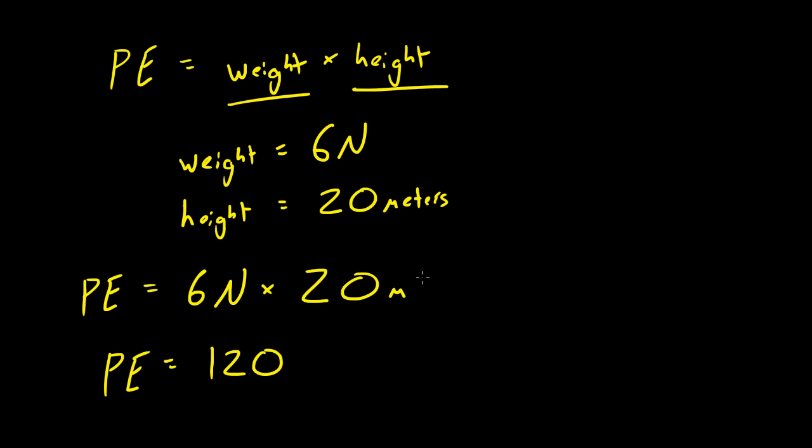And if you remember from the last tutorial, whenever you have newton times meter, you end up with a joule. So, this apple has a potential energy of 120 joules. One day, there is 120 joules of energy stored in this apple. That's how much potential it has.